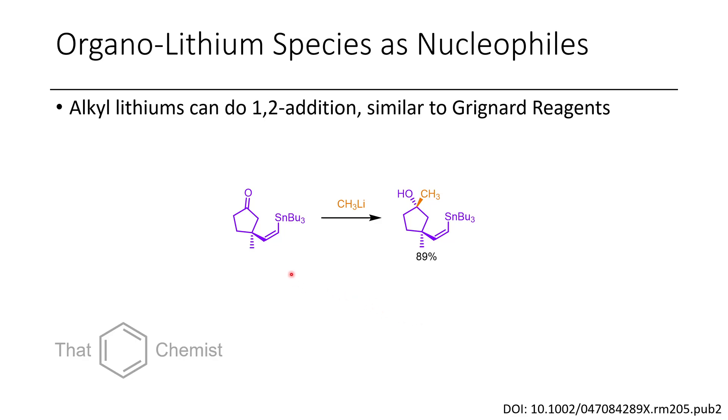In this first example, we do see an example of 1,2-addition to a carbonyl on this vinyl stannane. A stannane is just a tin-containing compound. Here we can see a regioselective addition of the methyl group to this carbonyl, so they only afford one product. If you're interested, there's a good review in the Electronic Encyclopedia of Reagents for Organic Synthesis that talks about the broader use of methyl lithium.